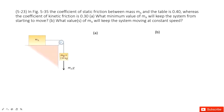So we can do the force analysis. For object B, we have gravity and tension. For object A, we have gravity, normal force, tension, and also friction. This friction, for the case of keeping the system from starting to move, is just static friction. Then we can write Newton's second law.